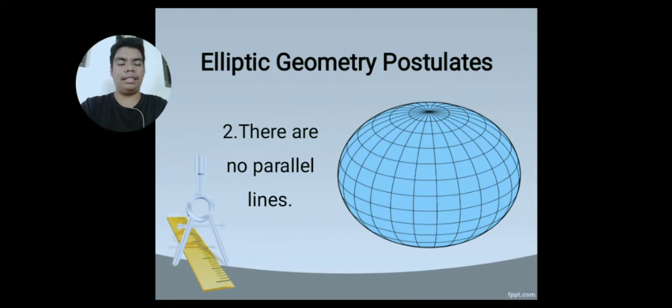There are no parallel lines as well. If we look closely at the figure at the right, we can see that all the lines always intersect from each other. We cannot see a line that is parallel to each other since all lines always cross from each other at some point.